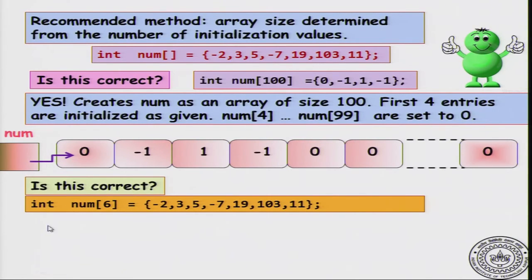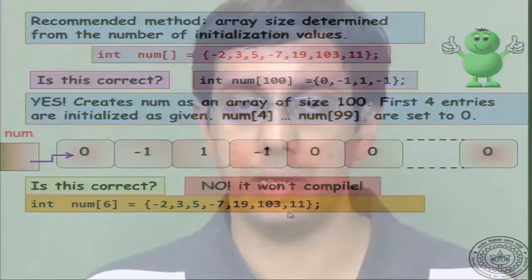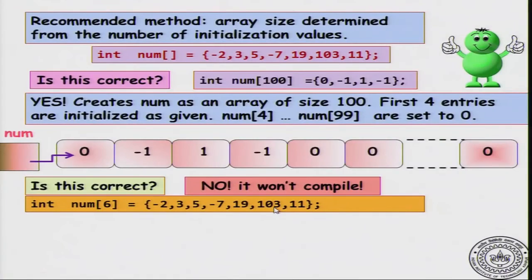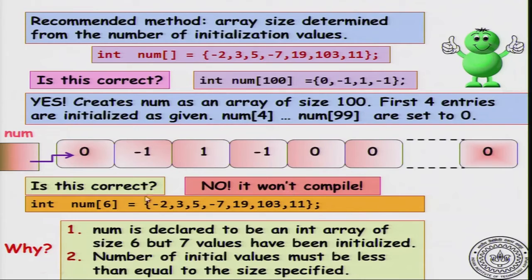Now is the following code correct? Num[6] and then you give a list of 7 values to initialize. Is this correct? The answer is no, it will not compile. If you write this code and compile it using GCC, you will get a compilation error. Why is that? We have declared an array of size 6, but we have given 7 initial values. There is no way to do this. The rule of thumb is that either give no size for the array and let the compiler figure out, or if you do give a size, it has to be at least 7 which is the number of values that you gave. It can be 10, it can be 100, but it cannot be less than 7.